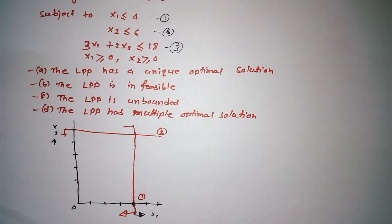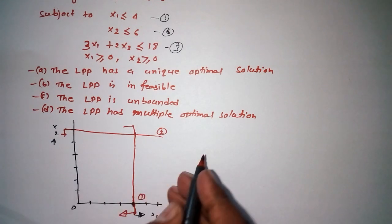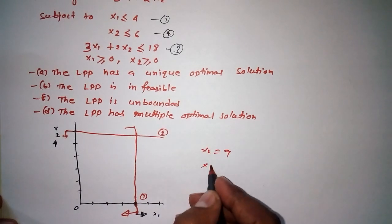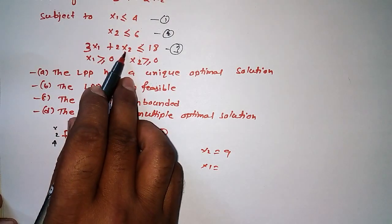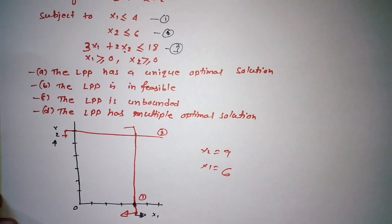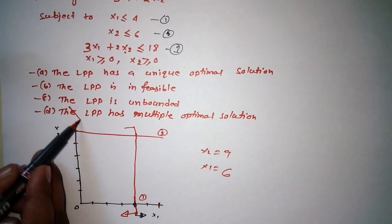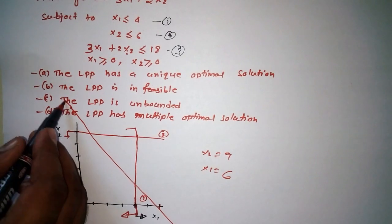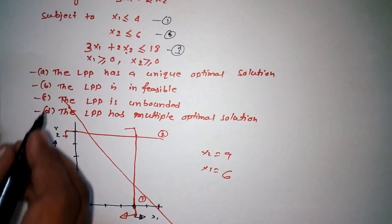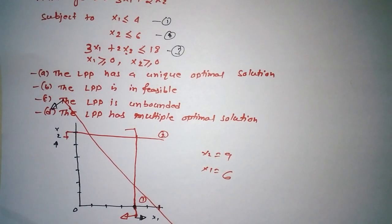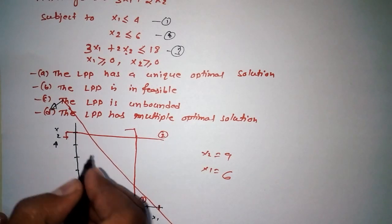If I put X1 equal to 0, then I get X2 equal to 9. And if X2 equals 0, then X1 equals 6. So we have X2 = 9 and X1 = 6. The line would be like this, and this region is towards the origin.